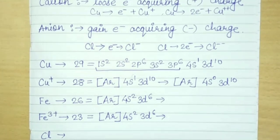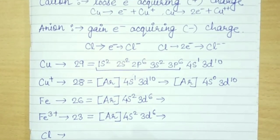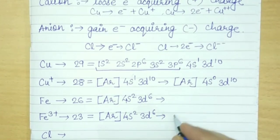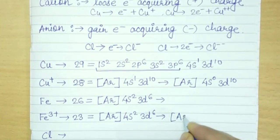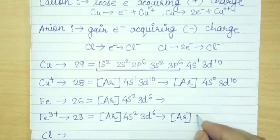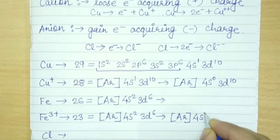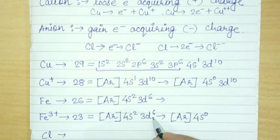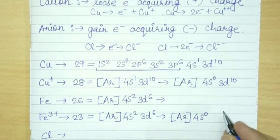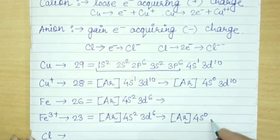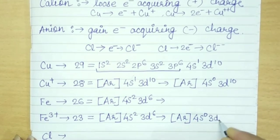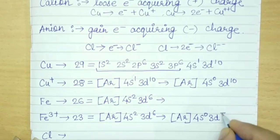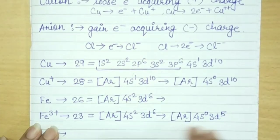Then for Fe configuration 4s2 3d6. Now we have to remove 3 electrons. So first we will remove electrons from the outermost orbital, which is 4s. Then after that from lower energy level. So first from 4s, you remove 2 electrons from 4s, so it becomes zero. Then one electron remaining, from which subshell? From 3d. So from 3d, one electron removed. How many are left? 5. So this is the configuration of Fe 3 plus.